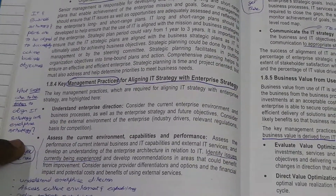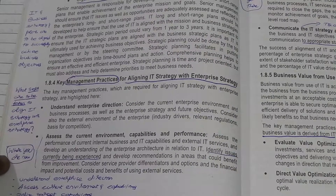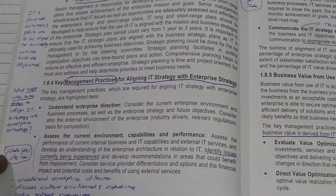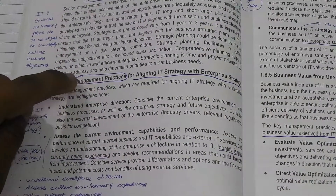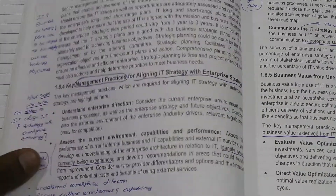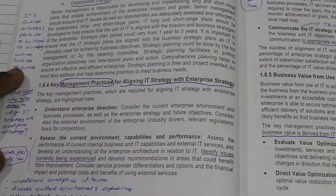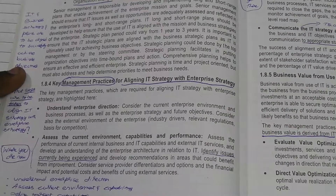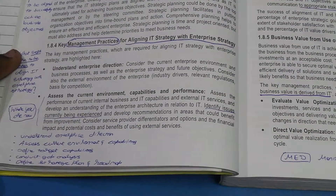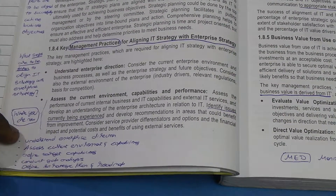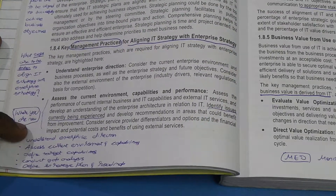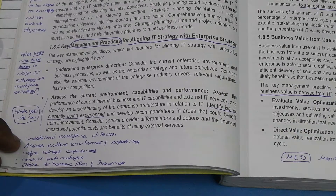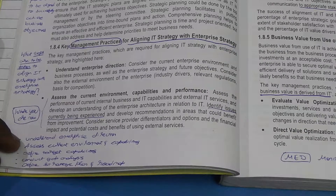Next are the key management practices for aligning IT strategy with the enterprise strategy. This paragraph talks about how we can align the IT strategy with the enterprise strategy. The approach is logical: first we understand what is the enterprise strategy and where the enterprise wants to go — that is the enterprise direction. Then we assess the current environment and its capabilities.